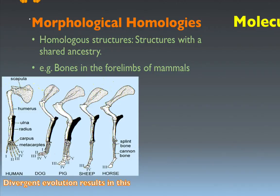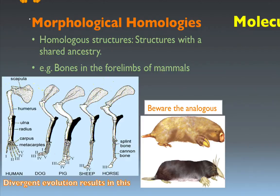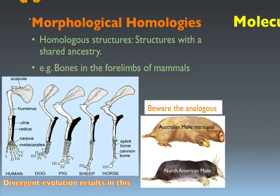Beware of analogous structures as well — they are different from homologous structures. Analogous structures look the same but have completely different origins. For example, the Australian mole and the North American mole look pretty similar and share the same habitat, but one is a marsupial and the other is a placental mammal — they have entirely different ways of reproducing and nursing their young. We must be careful that they don't actually have a common ancestor.